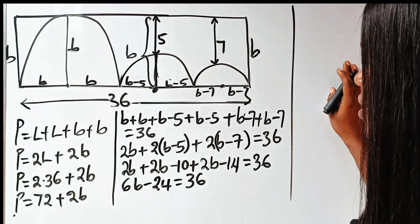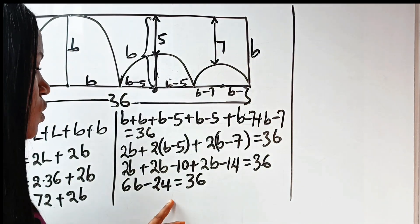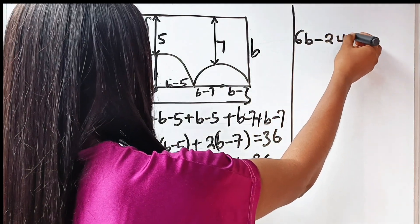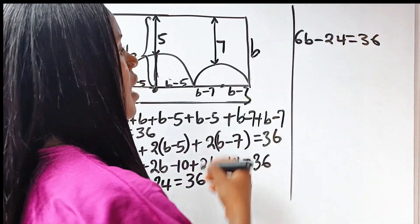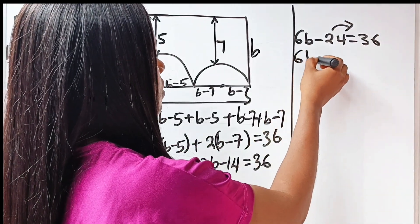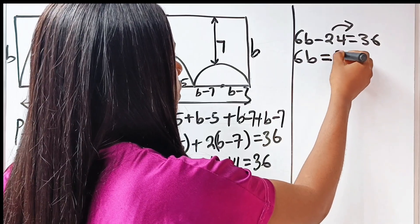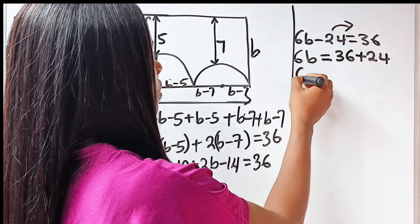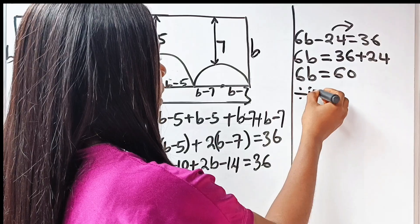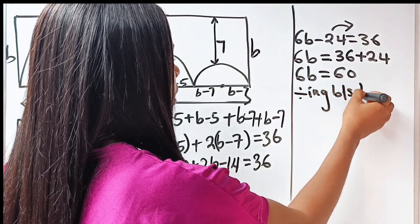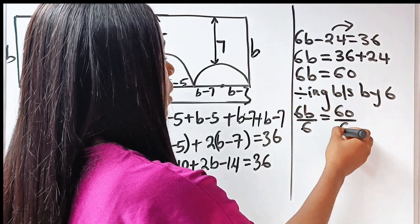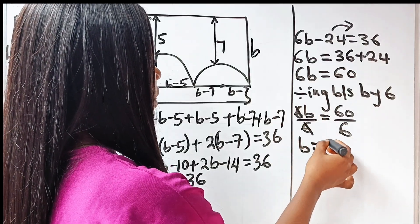So we have 6B minus 24 equals 36. Adding 24 to both sides, we get 6B equals 36 plus 24, which is 60. Dividing both sides by 6: 6B divided by 6 equals 60 divided by 6, so B equals 10.